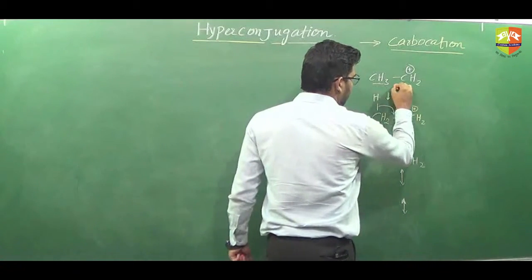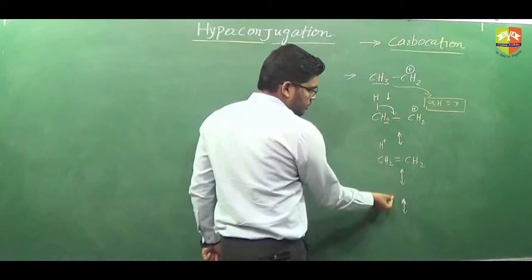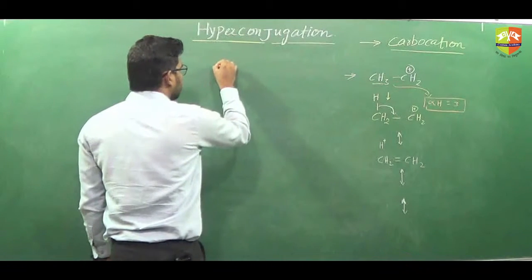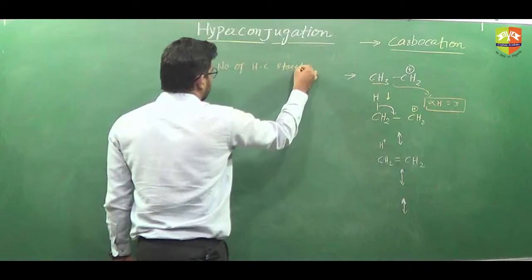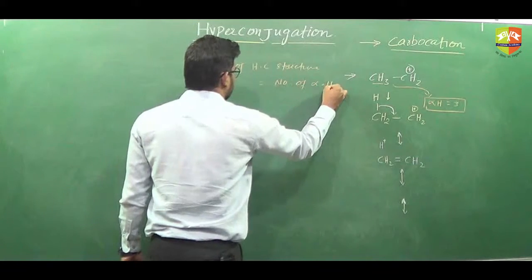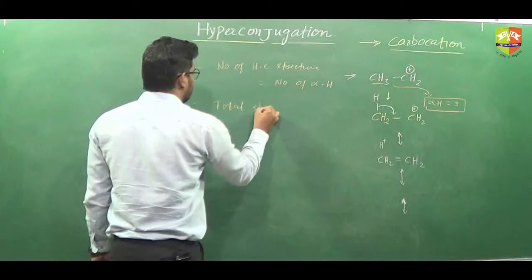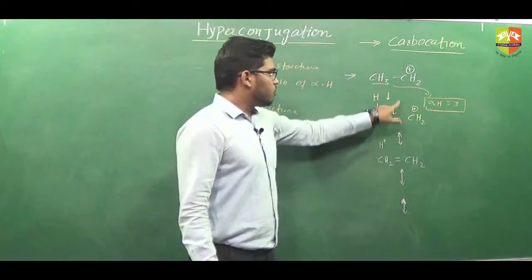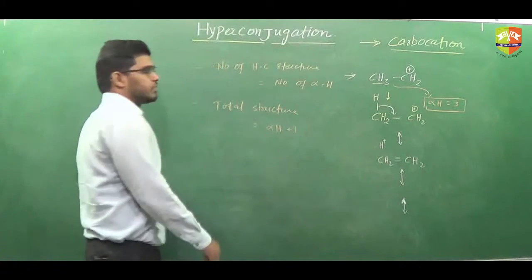The number of alpha hydrogens is three. So the total hyperconjugating structures equals the number of alpha hydrogens, which is three in this case. If they ask you how many total structures we can draw, that will be three hyperconjugating structures plus one structure we already have. So total it will be: number of alpha hydrogens plus one.